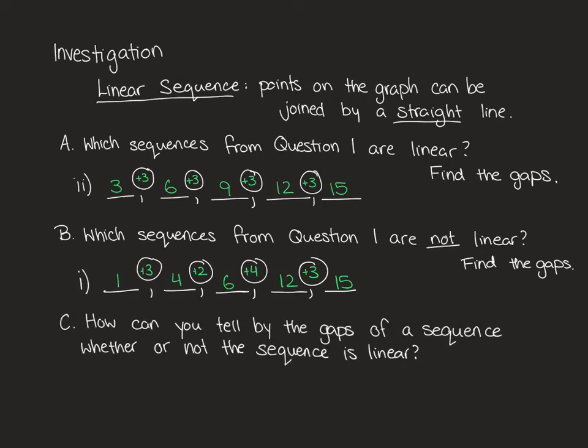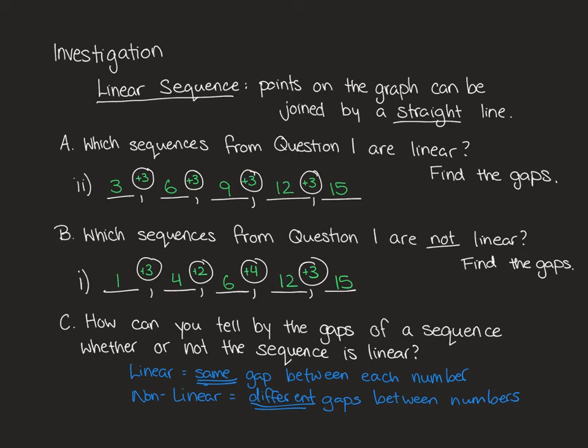Part C asks the final question for this: How can you tell by looking at the gaps whether a sequence is linear or non-linear? If we look at the linear ones and you look at their gaps, you should notice that they are all the same, whereas the non-linear sequences the gaps change. Linear sequences have the same gap between each of the numbers, whereas a non-linear sequence has different gaps between each of the numbers.